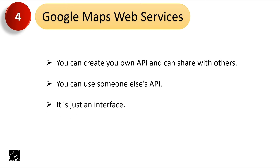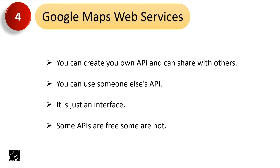A third important point: API is an interface. It will tell you about what, not how. It won't tell you how the logic was written or what services are involved — it just gives you the value. That's what an interface means. Fourth point: some APIs are free, some are not. For example, Google Maps is free up to a certain range of traffic, but after that you have to pay.